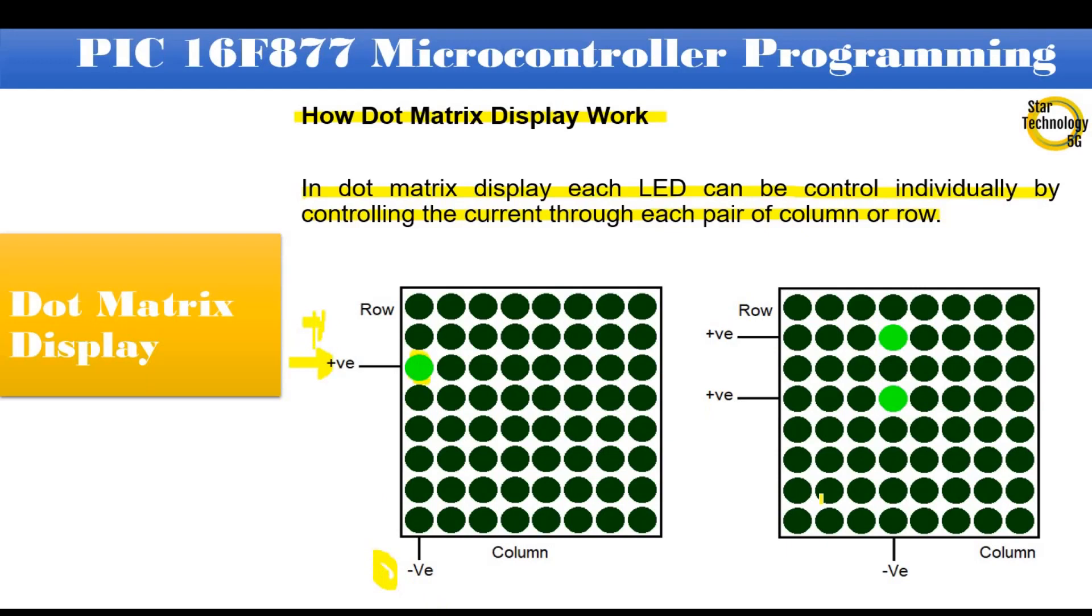Then this LED gets turned on. If you want to turn on row number 2 and row number 4 and column number 4 LEDs, we need to give logic high or positive volts to row number 2 and row number 4 and give logic low or ground volts to column number 4. Then these LEDs get turned on.